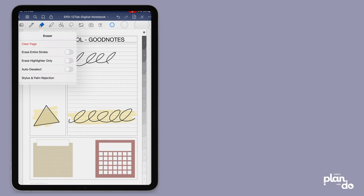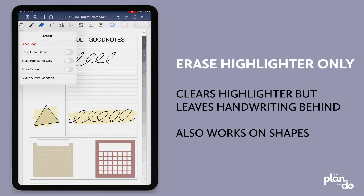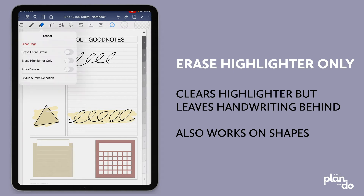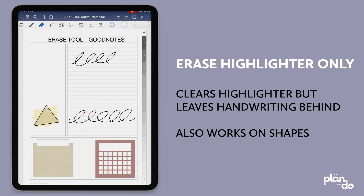The next option, a really useful one, is erase highlighter only. I've got some text — or scribble rather — that I've highlighted down at the bottom. If I want to erase that but only want to erase the highlighter, without this option I'm erasing everything — the handwriting and the highlighter as well. So if I tap and hold my eraser tool and switch erase highlighter only on, now if I come back and erase, I can just erase the highlighter but leave the text behind. This also works on shapes — you can remove the highlighter from a triangle and leave the shape behind.